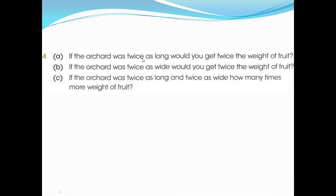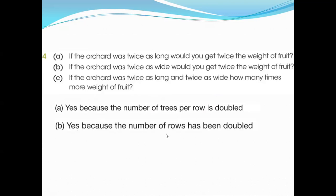Question 4. If the orchard were twice as long, would you get twice the weight of the fruit? Yeah, obviously. If we have twice ground, so we will get the twice answer. So you can say yes, because the number of trees per row is doubled. Yes. If you have same like this, another field, we put same, we can make the double. If the orchard was twice as width, if long, then we can also get double. If width, same like question a, we can also get double. Trees per row and trees per column also. Yes, because the number of rows has been doubled. They seem like this, same like the previous one. If the orchard was twice as long and twice as width, easy. Twice plus twice mean 2 plus 2. So how many times more weight of fruit? Four times.